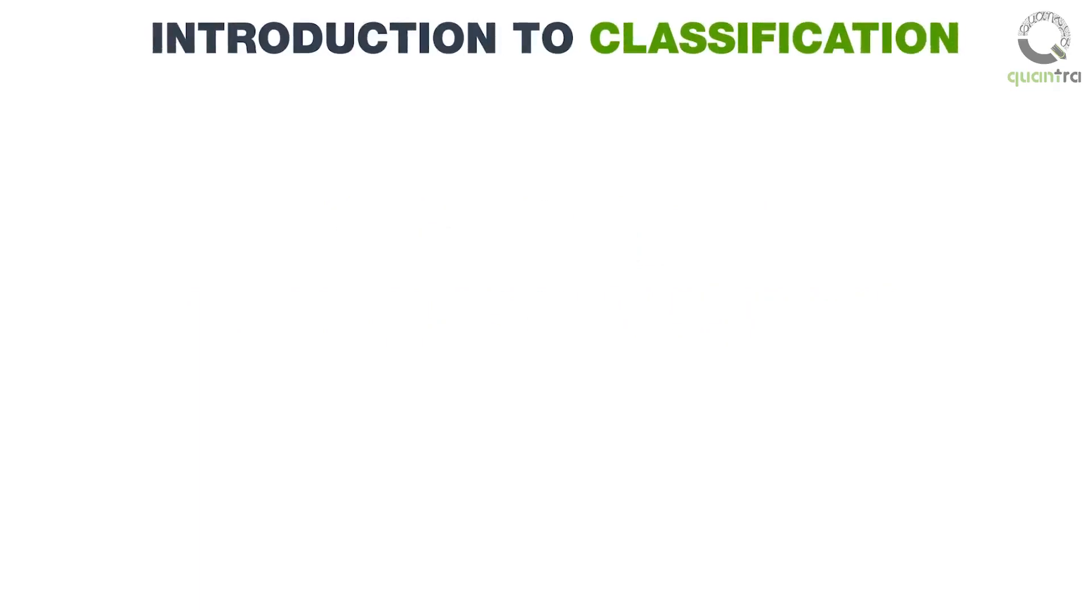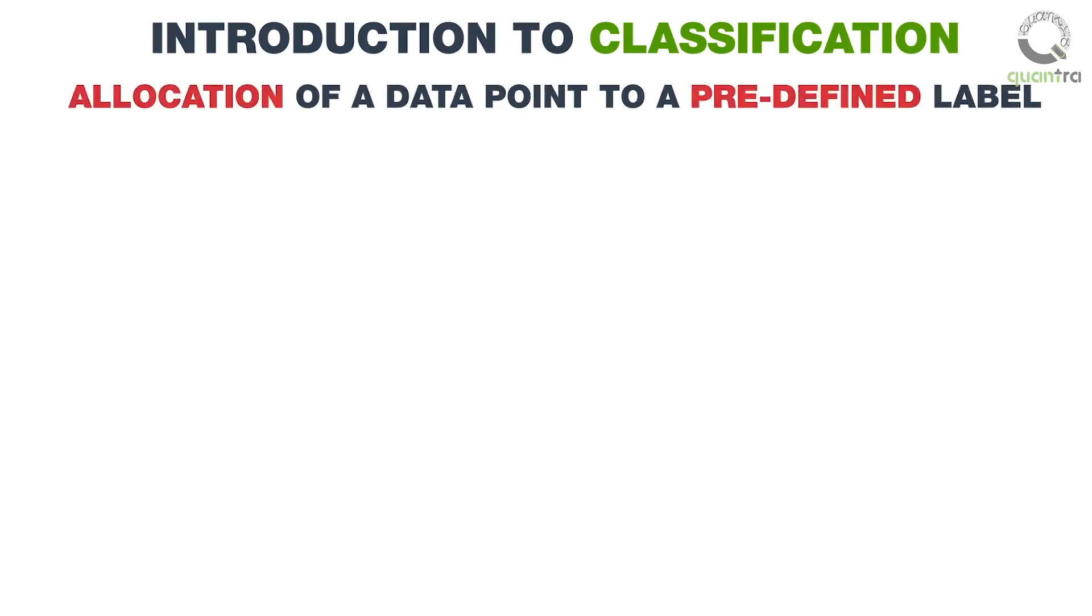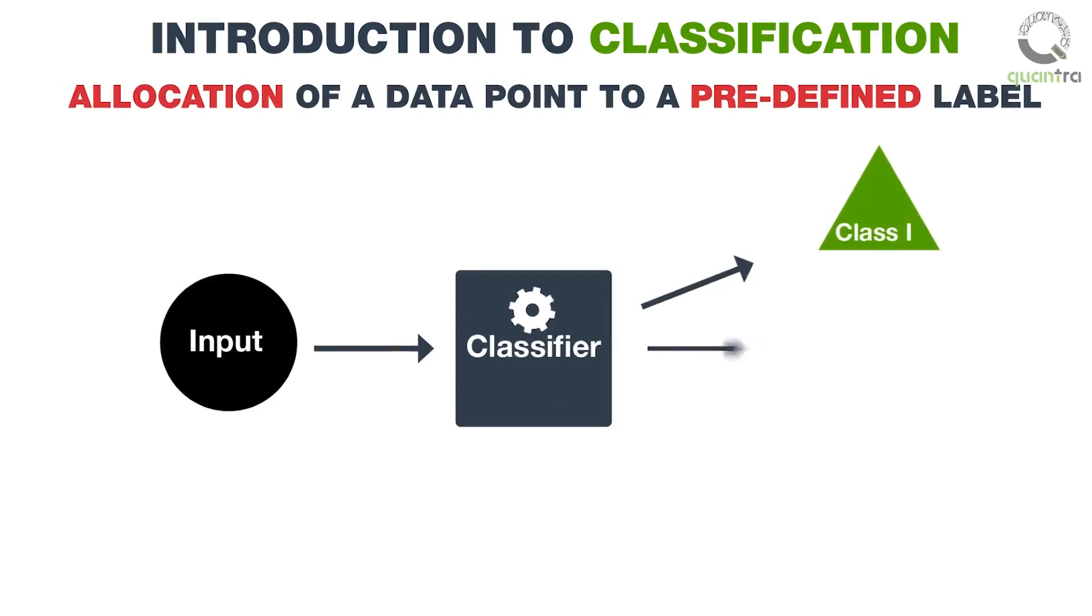Classification is an approach of machine learning which involves the allocation of a data point to a predefined label. This involves taking an input and running it into a classification technique or a classifier to map the input into a discrete class or category.